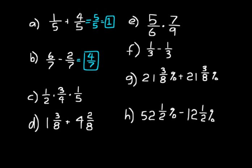On C, multiply all the numerators together: one times three times one is three. Then multiply all of the denominators: two times four is eight, times five is forty. The answer is three over forty. Notice how I put a box around the answer — that distinguishes it from the rest of the problem, and you should do that as well so it's clear when grading.